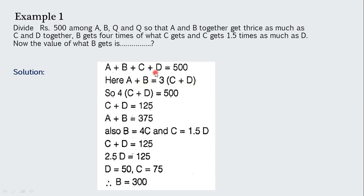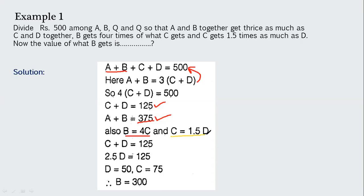Substituting A+B = 3(C+D) into the total: 3(C+D) + (C+D) = 500, so 4(C+D) = 500, giving C+D = 125, and A+B = 375. Next, B = 4C and C = 1.5D. Since C+D = 125, substituting C = 1.5D gives 1.5D + D = 2.5D = 125, so D = 50.